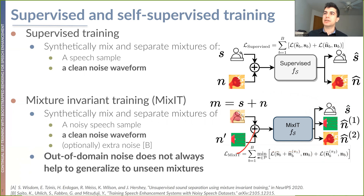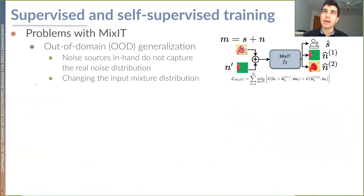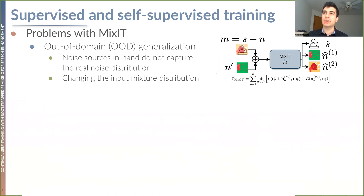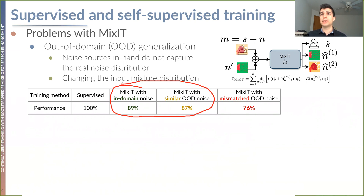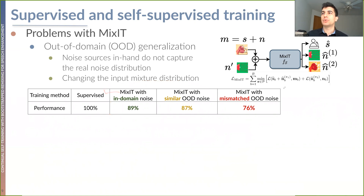We can optionally inject some extra noise, but as we will see, this leads to poor out-of-domain generalization to ambient mixtures. This problem arises because we don't know if the noise dataset closely captures the real noise distribution, and also this artificial mixing process artificially changes the input mixture distribution. We see that as long as you have in-domain or similar in-domain noise, you do quite well, closely matching supervised performance. But once you go to a slightly mismatched out-of-domain dataset, the performance drops significantly.